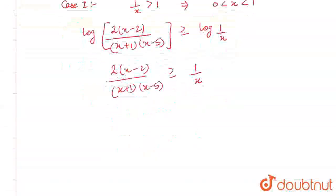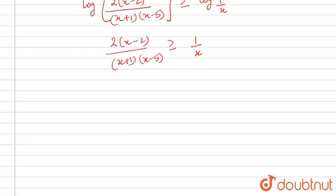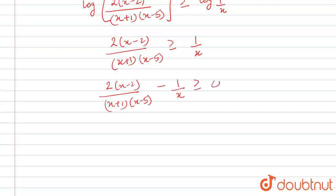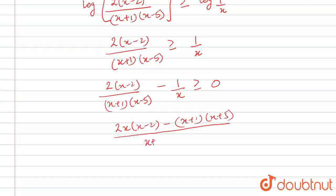When we consider this and take the 1/x to the right hand side: 2x minus 2 times (x+1) times (x minus 5) minus 1/x. We know that 1/x is a positive quantity, so the sign will not change, giving us greater than or equal to 0. On taking the LCM, we get 2x(x minus 2) minus (x+1)(x+5), all divided by (x+1)(x minus 5) times x, is greater than or equal to 0.